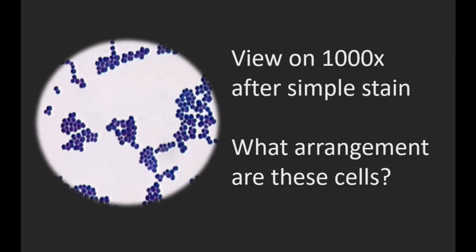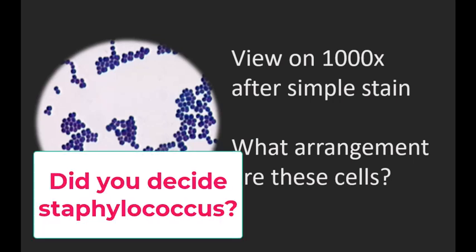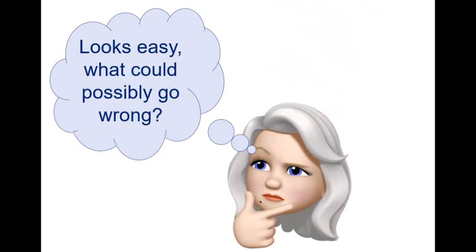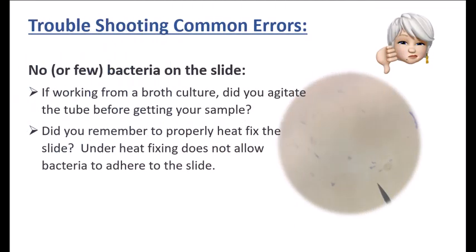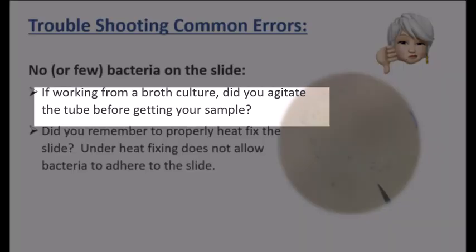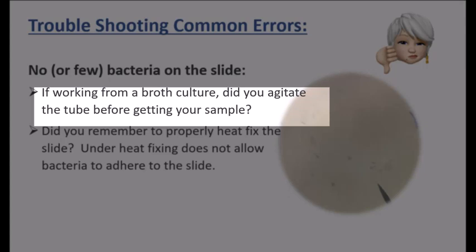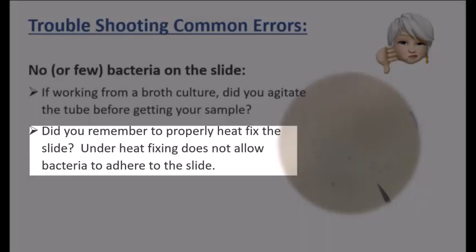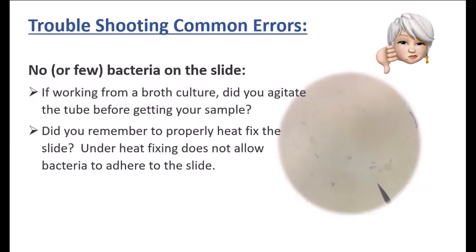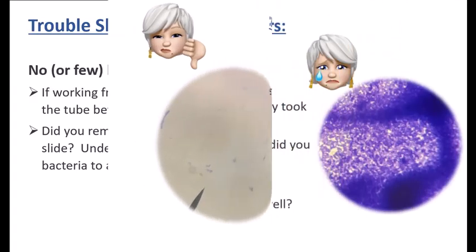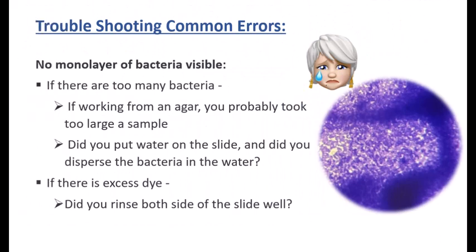So there you have it. That's easy. What could possibly go wrong? Well, I'm glad you asked. Here's some common errors. If you look under that microscope and there was no bacteria or very few bacteria on the slide, think about this. If you were working from a broth culture, did you remember to agitate the tube before you got your sample? Did you remember to properly heat fix the slide? Underheat fixing does not allow bacteria to adhere to the slide.